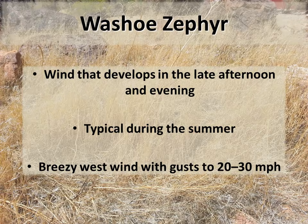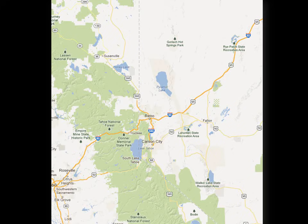Similar to what Mark Twain described, the Washoe Zephyr occurs on most summer days on the east side of the Sierra. This almost daily wind impacts areas around Reno, Carson City, and into the Great Basin, with late afternoon and early evening west winds gusting around 20 to 30 mph.